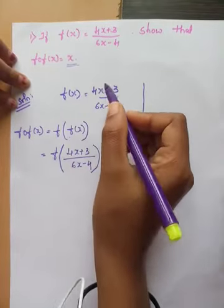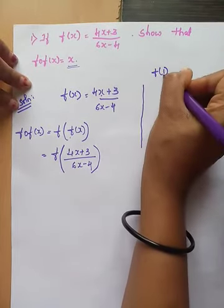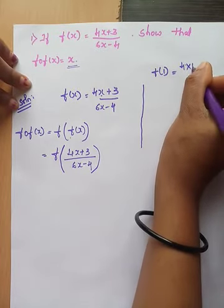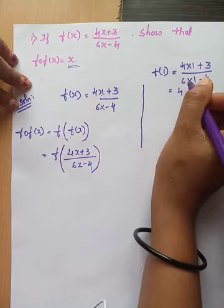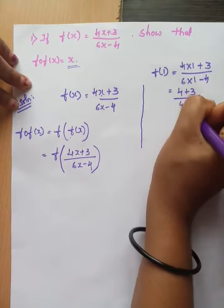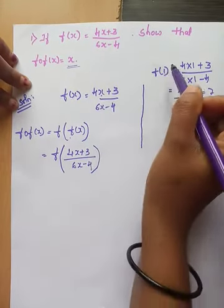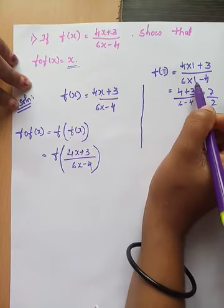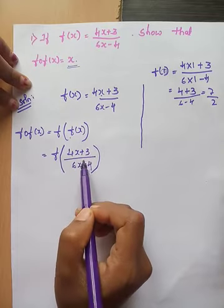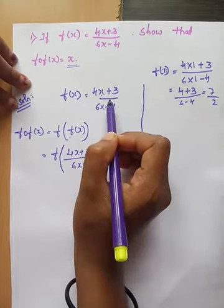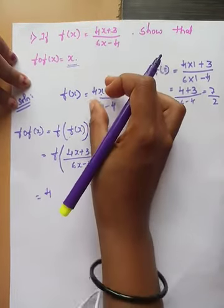We know that f(x) = (4x + 3)/(6x - 4). To understand the substitution, consider f(1): in place of x we substitute 1, giving 4(1) + 3 divided by 6(1) - 4, which is 7/2. Similarly, wherever we have x in the function, we now replace it with the fraction (4x + 3)/(6x - 4). So f(f(x)) = 4·[(4x+3)/(6x-4)] + 3, divided by 6·[(4x+3)/(6x-4)] - 4.